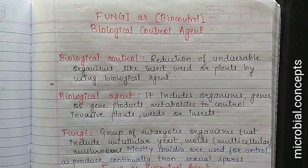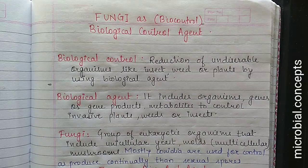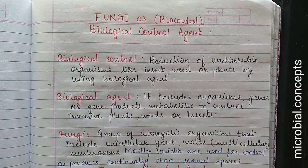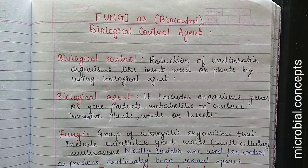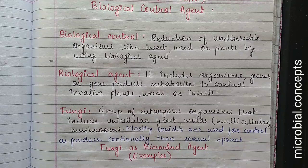Hello and welcome to Microbial Concepts. Today we are going to discuss about fungi as a biological control agent, that is a biocontrol agent. This is an MSc topic covered in applied microbiology. We are going to discuss about some examples of fungi and on which kind of disease or pest these fungi are used. First, what is biological control or biocontrol? It means reduction of undesirable organisms.